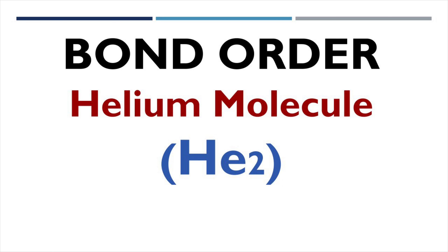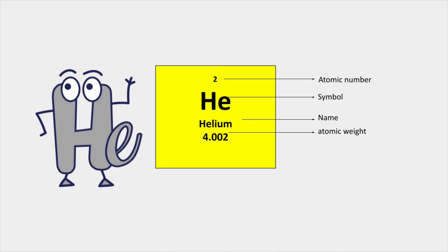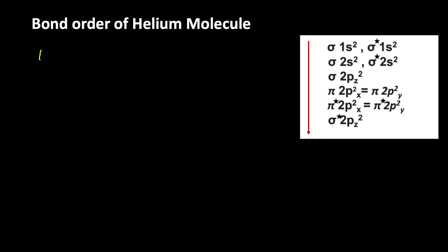Welcome to Aurora Chemistry for Everyone. In this video, let us analyze how to find the bond order of a helium molecule based on molecular orbital theory. Helium molecule is formed when two helium atoms are combined. Helium has atomic number 2, so from that we can write the electronic configuration: 1s².